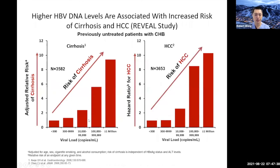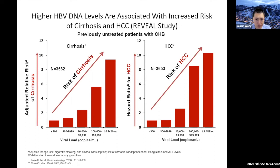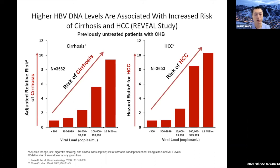This graph from a landmark paper in JAMA 2006 from the Hepatitis B REVEAL study shows a very key point: virus level directly correlates with risk. The higher the virus level, the higher your risk of cirrhosis; similarly, the higher the virus level, the higher the risk of liver cancer. As a consequence, it's so important to identify these patients early, because if you can suppress the virus with antiviral therapy, you therefore reduce your risk of developing cirrhosis and liver cancer.